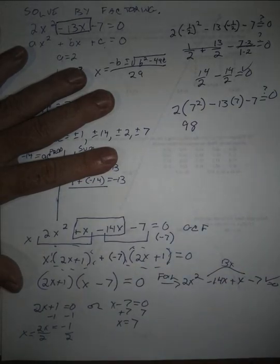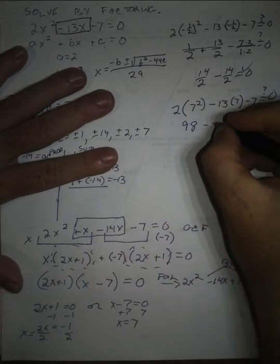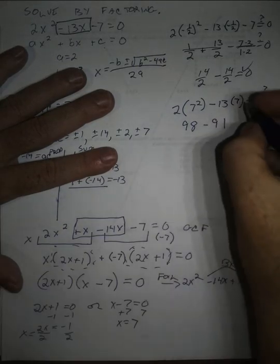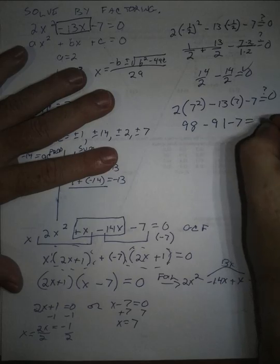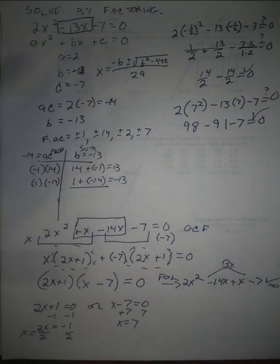7 times 13 is minus 91, minus 7, which is indeed zero.